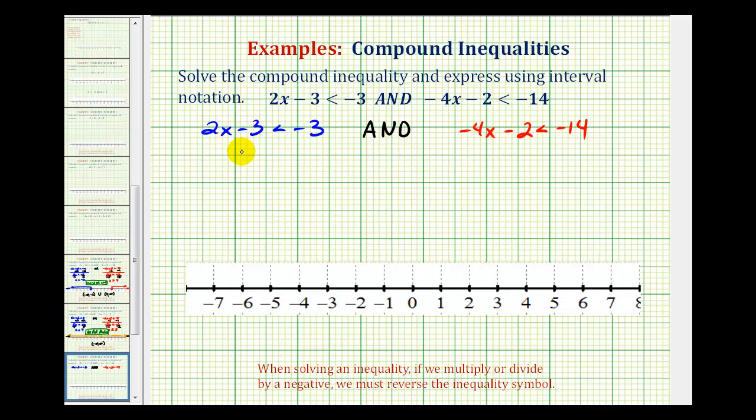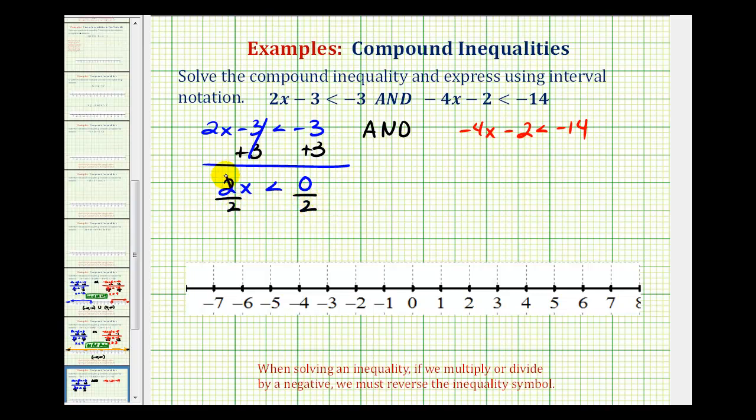To isolate x we'll add 3 to both sides. This would be zero, so we have 2x is less than zero and we divide both sides by 2. We have x is less than zero.